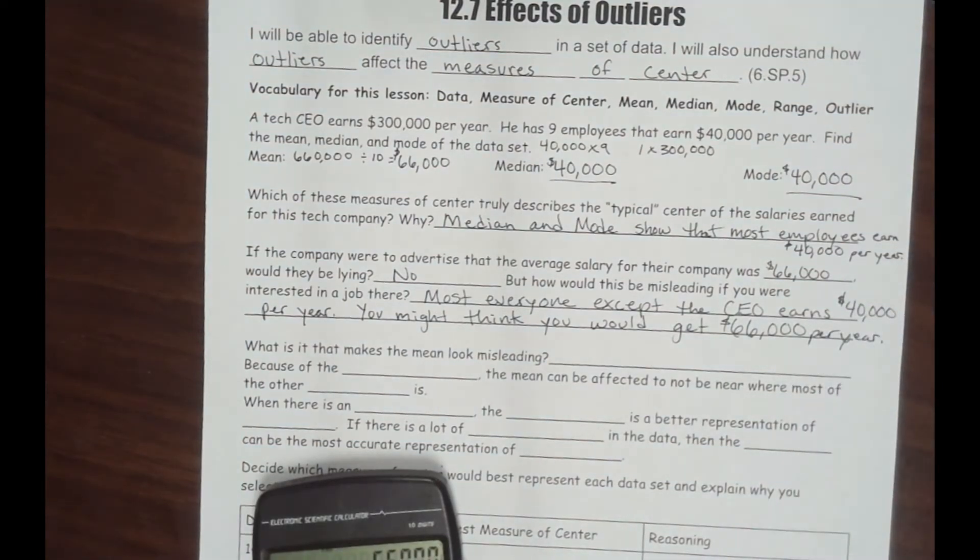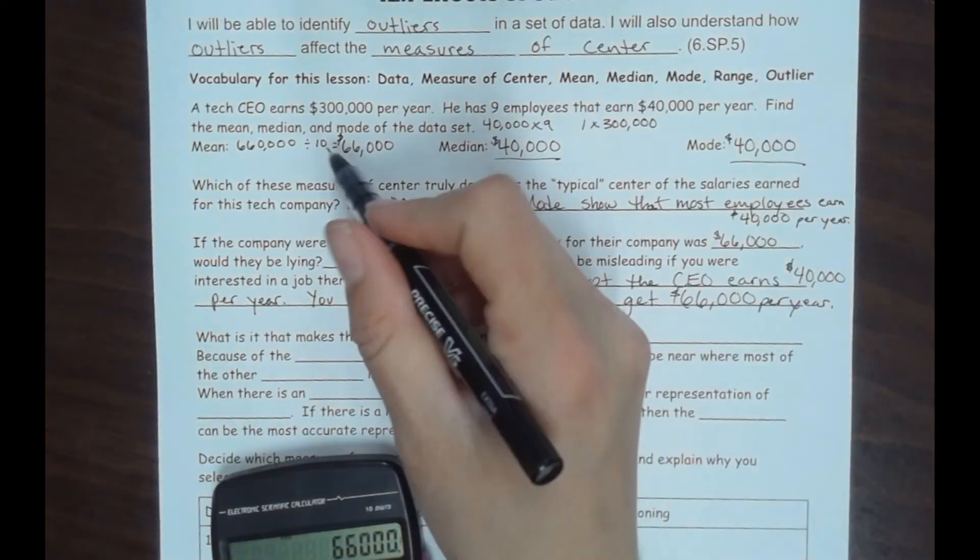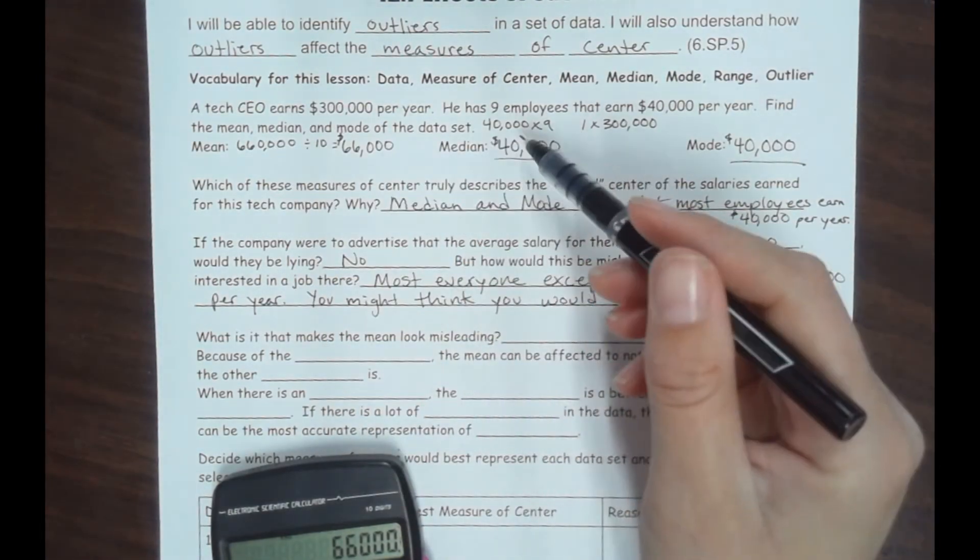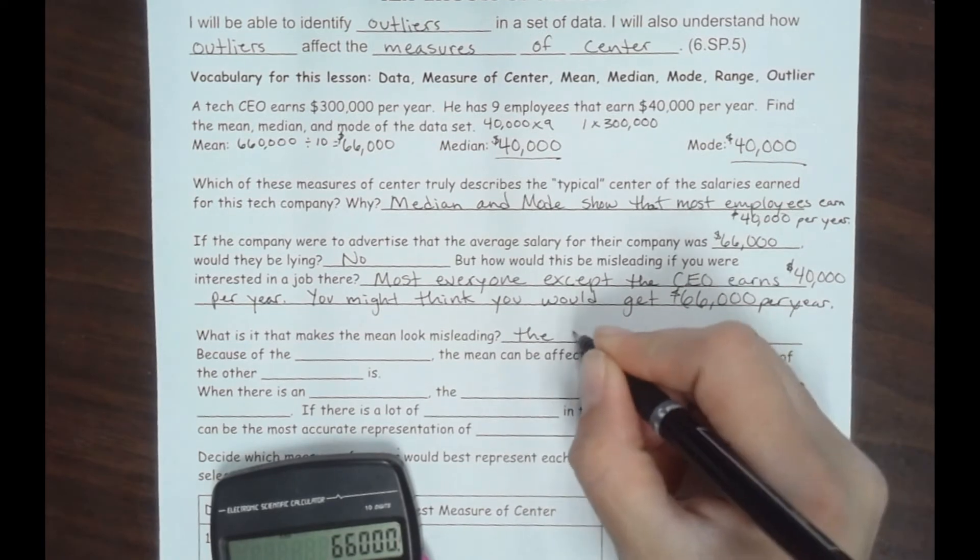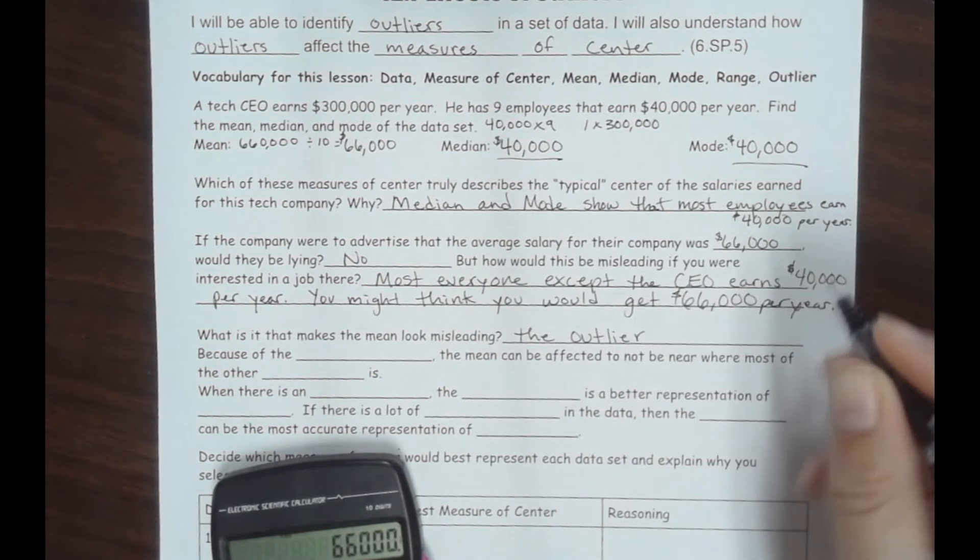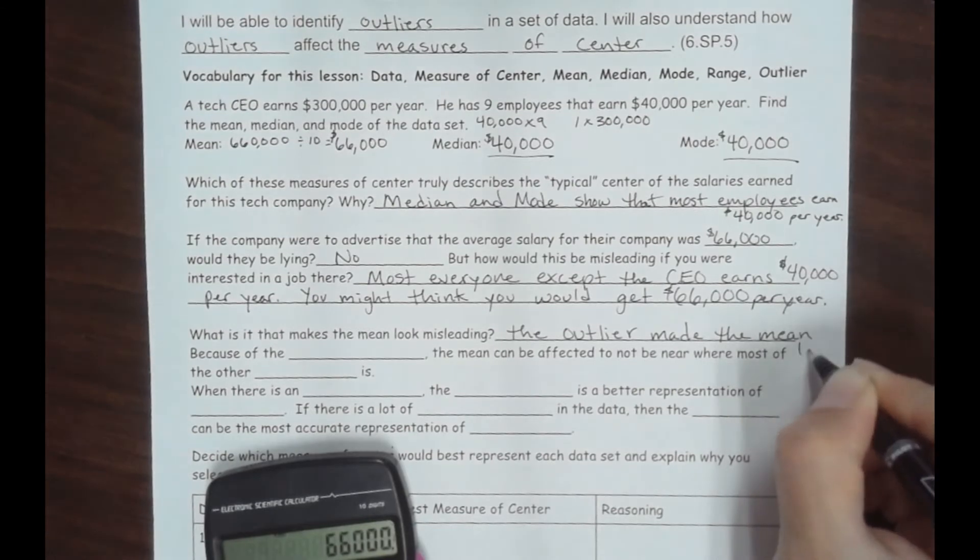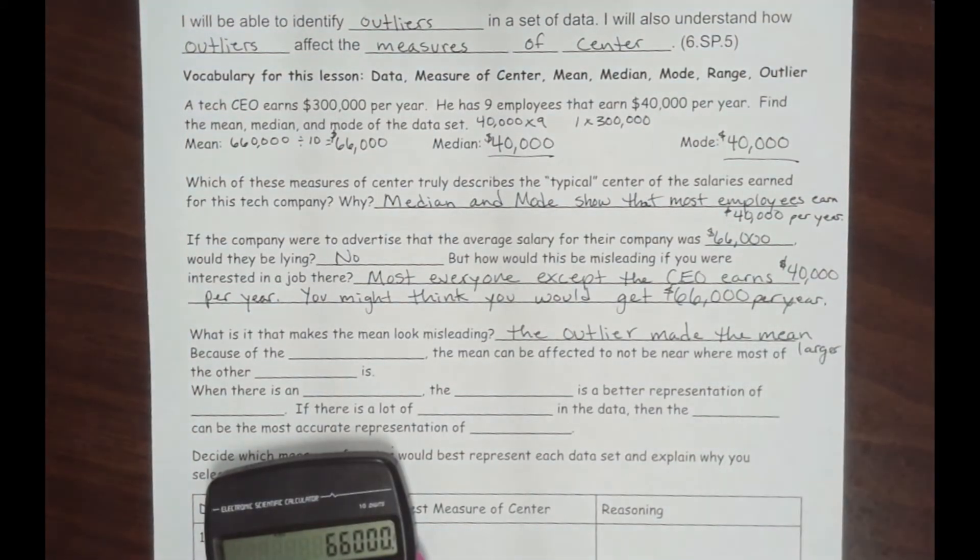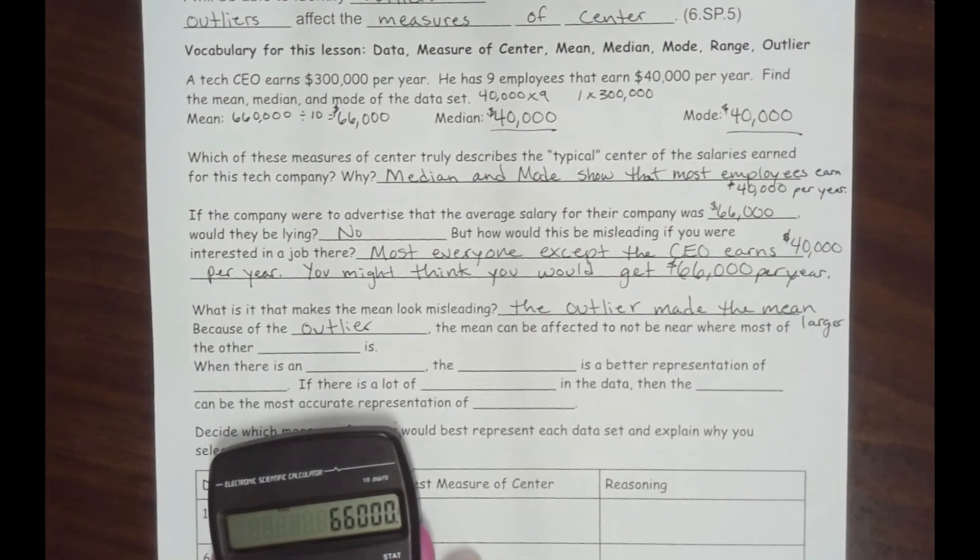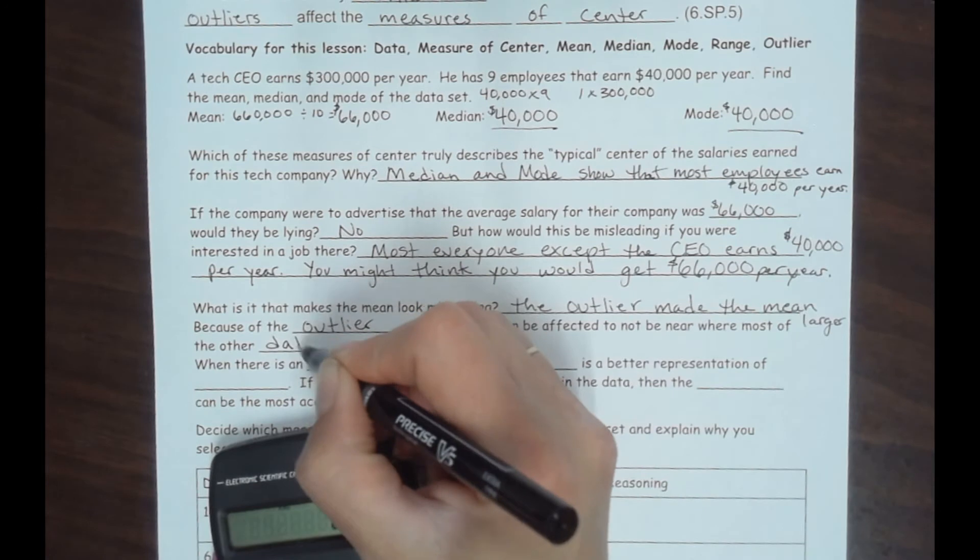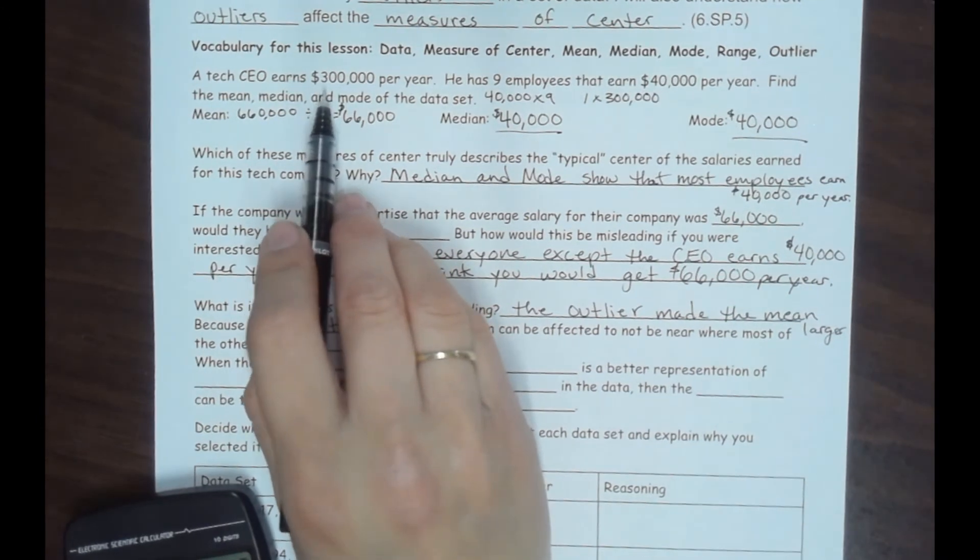So what is it that makes this mean look misleading? Well, it's because of that CEO salary in there. When we added them all together, remember how we did $40,000 times 9? That was just barely over what the CEO made himself. So the outlier changed the mean. The outlier made the mean look huge. The mean can be affected to be not near where most of the other data is. So this is an outlier; it was way larger than the other salaries in the company.